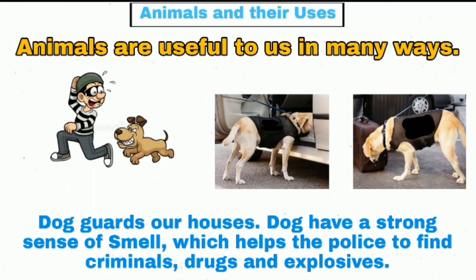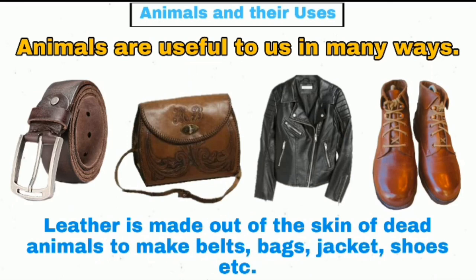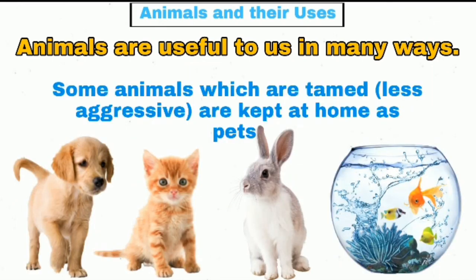which helps the police to find criminals, drugs, and explosives. Leather is made out of the skin of dead animals to make belts, bags, jackets, and shoes, etc. Some animals which are tamed and less aggressive are kept at home as pets,